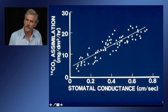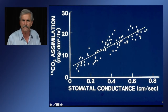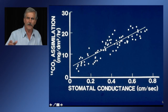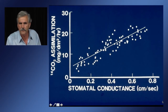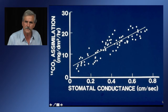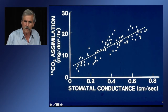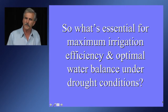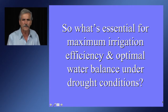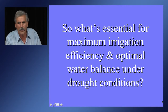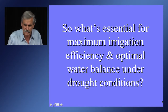If you're after vegetative growth in a plant like alfalfa, or you're growing carrots or onions, you're going to decrease total yield because you're decreasing CO2 assimilation. So you have to ask yourself: what's essential for maximum irrigation efficiency and optimal water balance under drought conditions?